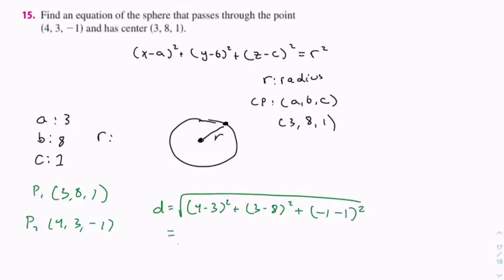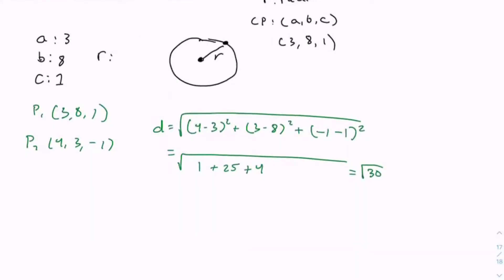This equals 1 squared, which is 1, plus negative 5 squared, which is 25, plus negative 2 squared, which is 4, equals square root of 30. So r = √30.